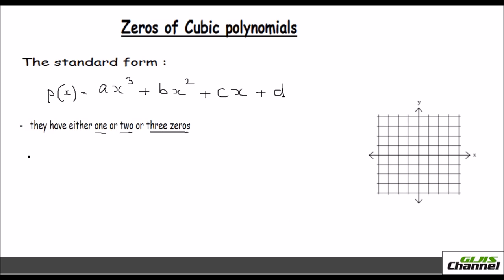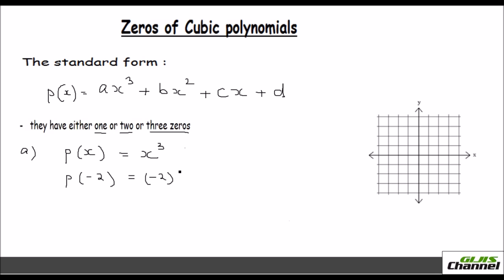For the first one, for one zero, let me take an example: P of X equals X cubed, just X cubed. So whatever value you substitute — say from negative 2 to positive 2 — when I give it as negative 2, it is going to be negative 2 the whole cubed, and that is minus 8.